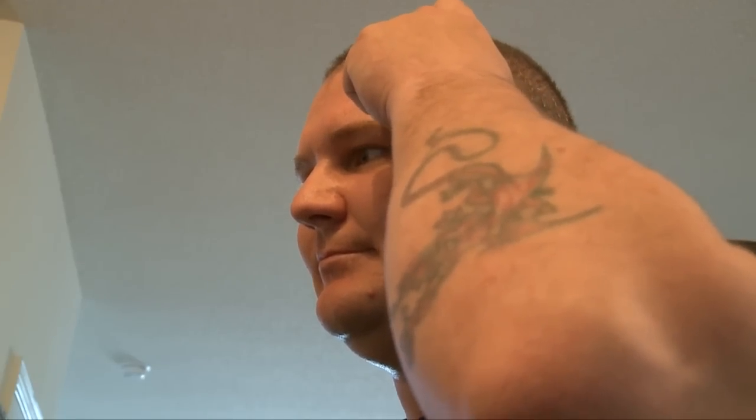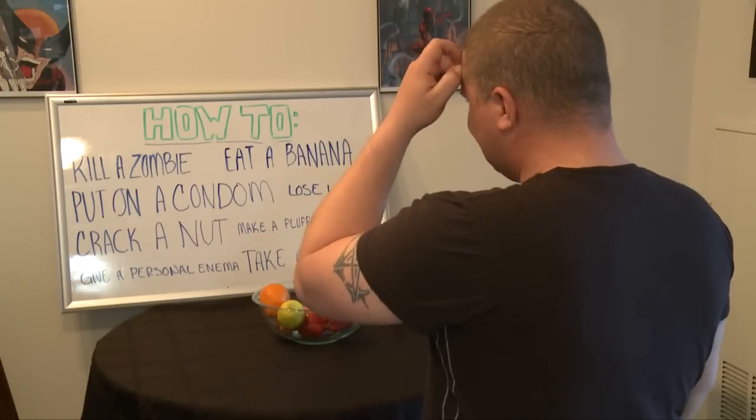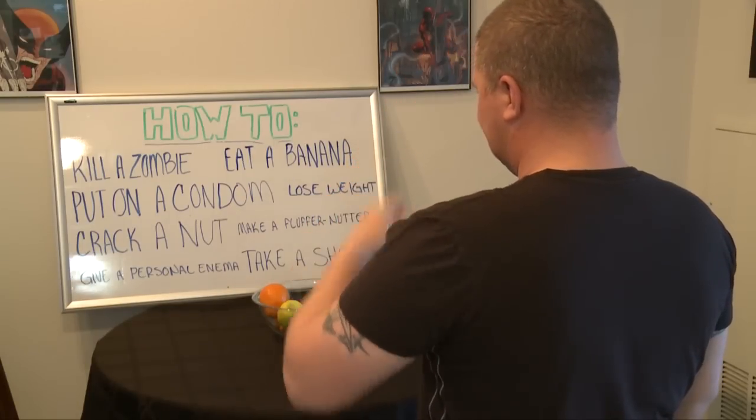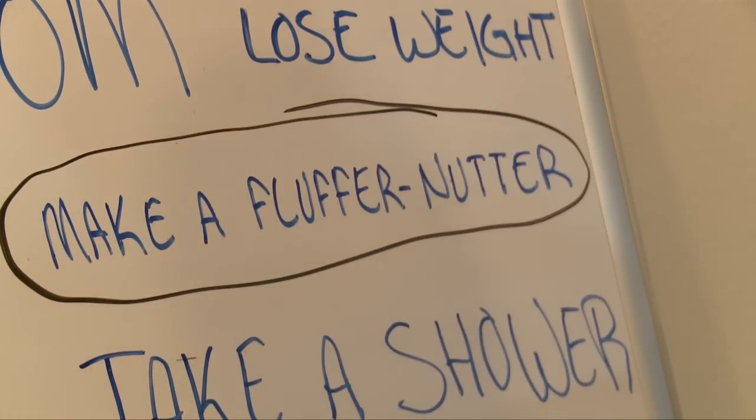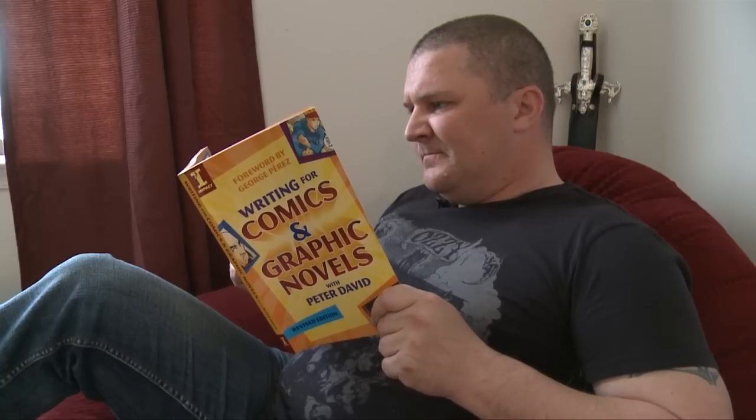First, you'll have to choose a topic that you're well-skilled at. For me, this was a no-brainer. I'll be using a peanut butter and marshmallow sandwich as my screen example. This sandwich is more popularly known as a fluffernutter. Remember, no one wants to watch a video of someone who doesn't know what they're talking about, unless you want to get laughed at. So make sure to study up on your material.